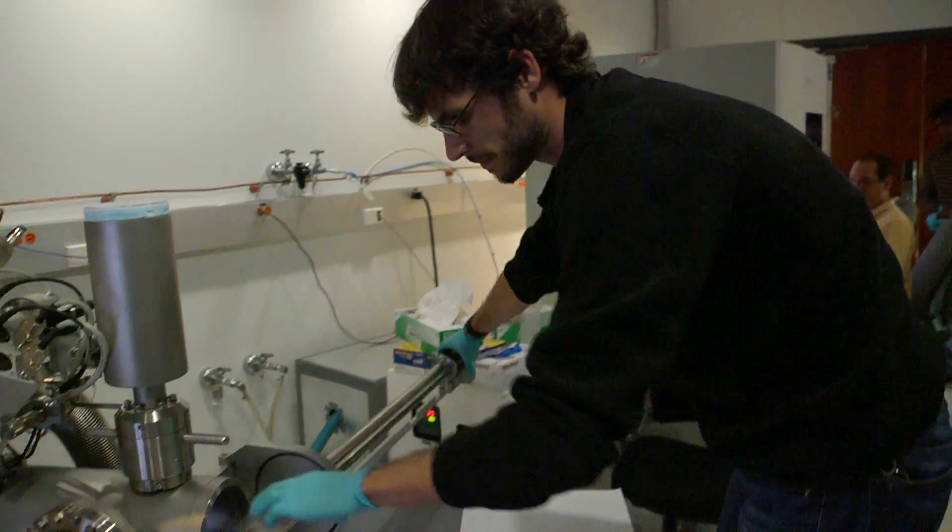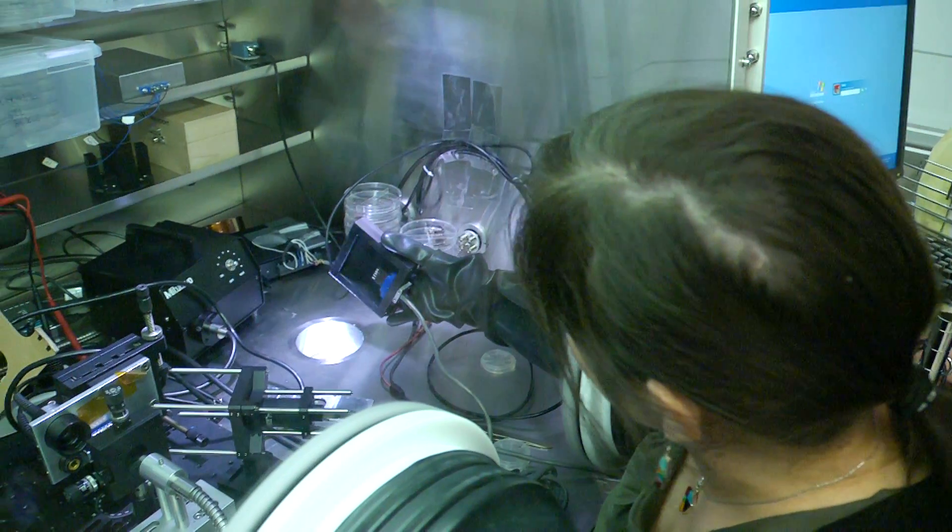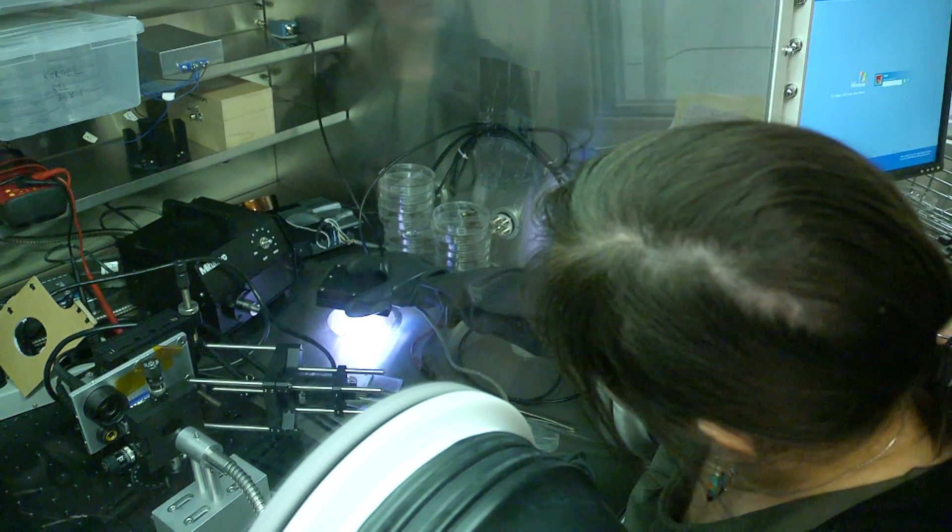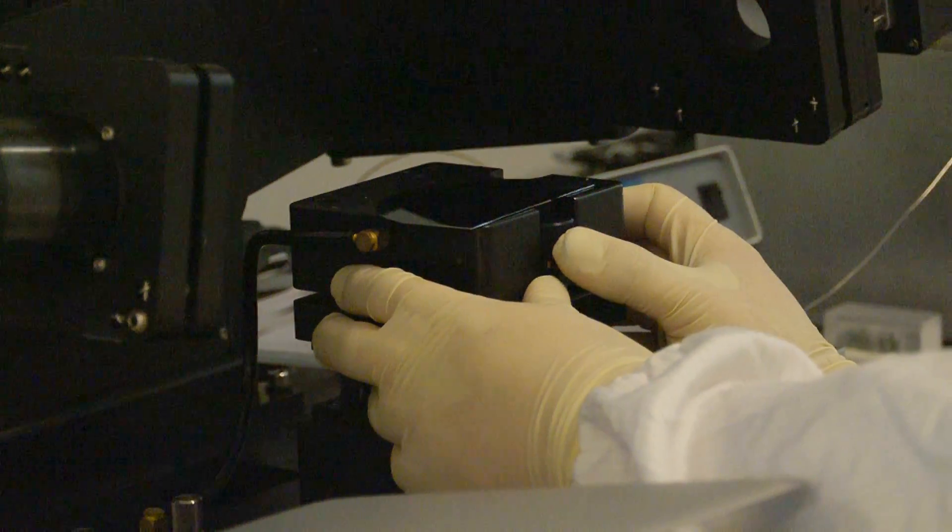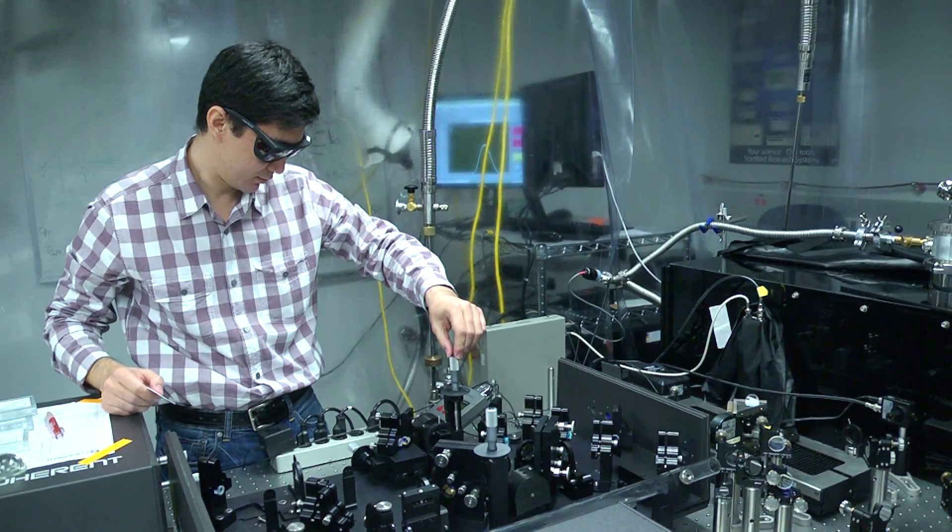The EFRC here investigates fundamental chemical and physical processes that control how sunlight is converted to electricity in solar cells and how energy is used and stored in batteries for electric vehicles. We need to move away from fossil fuel.